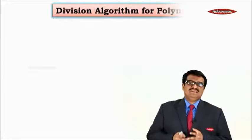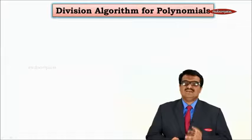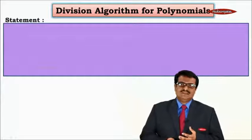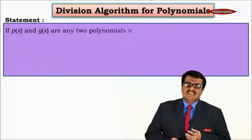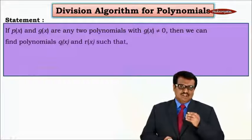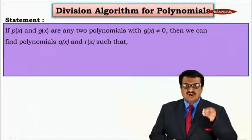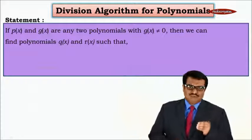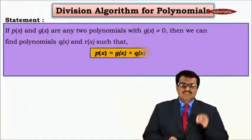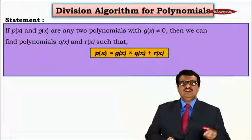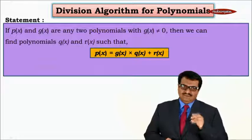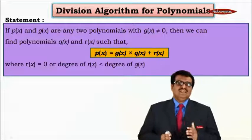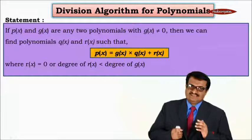We will learn the division algorithm for polynomials. Let us understand the textbook definition first. The statement is: if p(x) and g(x) are any two polynomials with g(x) not equal to 0, then we can find polynomials q(x) and r(x) such that p(x) equals g(x) into q(x) plus r(x), where r(x) is equal to 0 or the degree of r(x) is less than the degree of g(x).